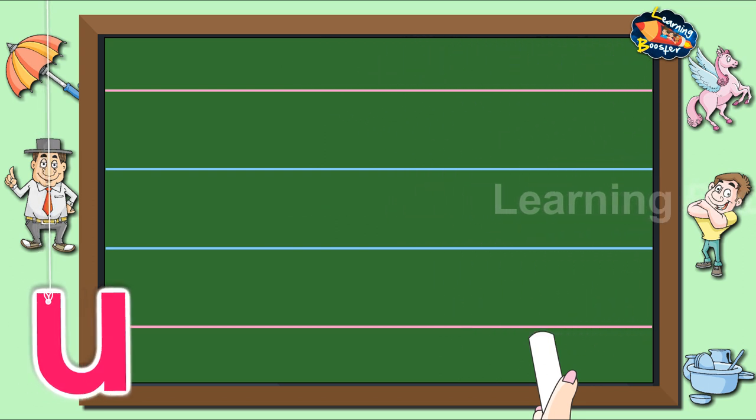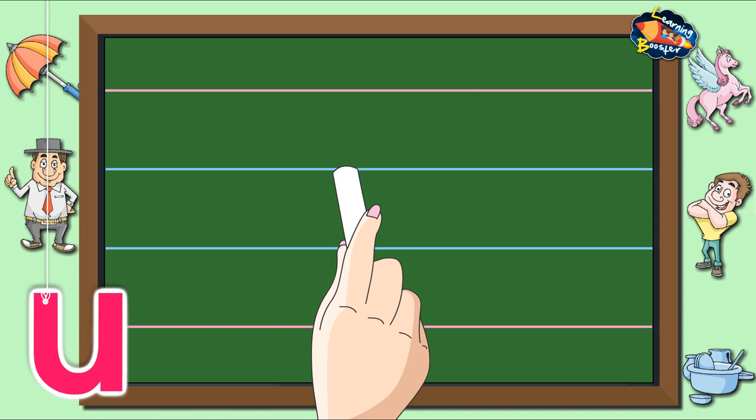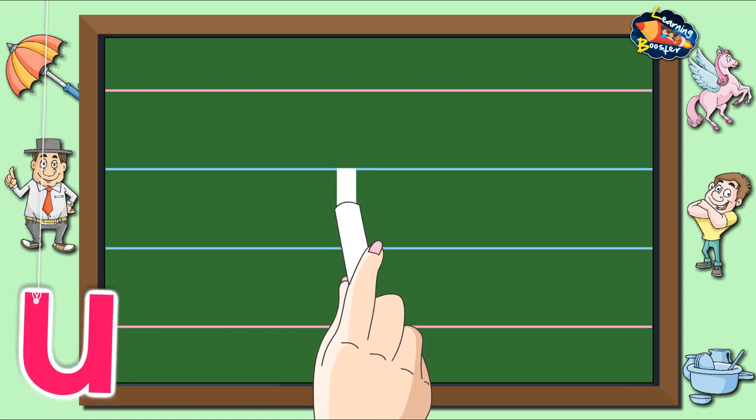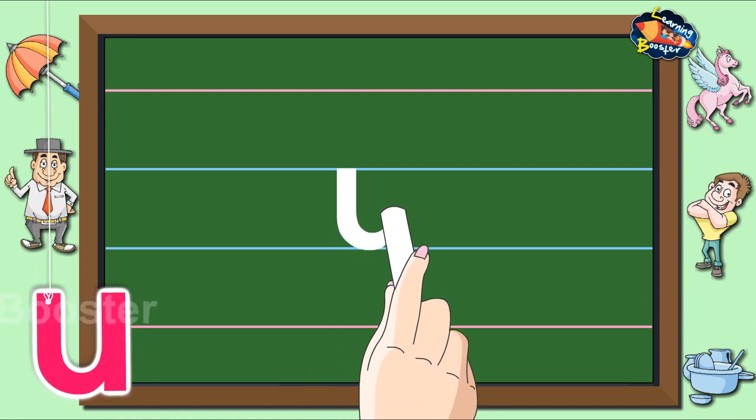Letter U. Start from the waistline and make a standing line till the baseline, ending with a small curl to the right.